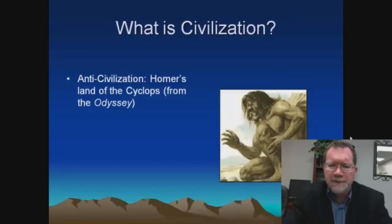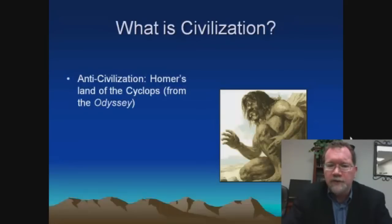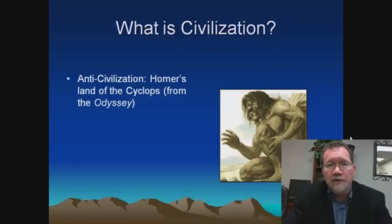This is Odysseus speaking in flashback: 'We sailed on further along and reached the country of the lawless, outrageous Cyclops, who, putting all their trust in the immortal gods, neither plow with their hands nor plant anything, but all grows for them without seed planting, without cultivation. These people have no institutions, no meetings for councils. Rather, they make their habitations in caverns hollowed among the peaks of the high mountains. And each one is the law for his own wives and children, and cares nothing about the others.'